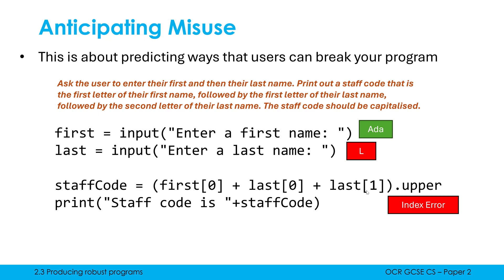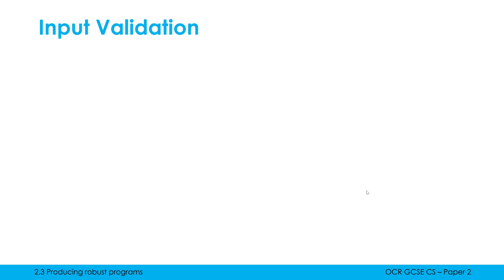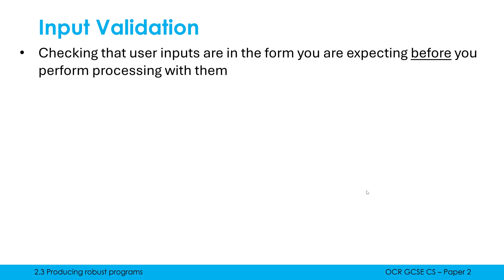So if you are anticipating misuse, you are pre-empting some possible issues and putting code in place to try and get over these issues. And often we do this via input validation — this is checking that user inputs are in the form you are expecting before you do any processing with them.